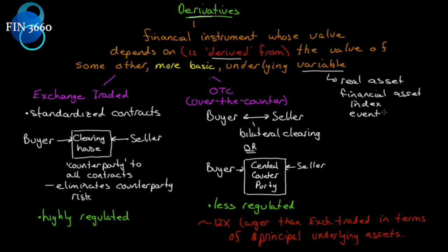We can also think of catastrophe bonds — cat bonds — which pay off except in the event of a catastrophe, so if the catastrophe happens it doesn't pay. That's why we say 'underlying variable' rather than 'underlying asset,' because the underlying doesn't necessarily need to be an asset — an event is not an asset. To be inclusive, a derivative is derived from the value of some other more basic underlying variable.